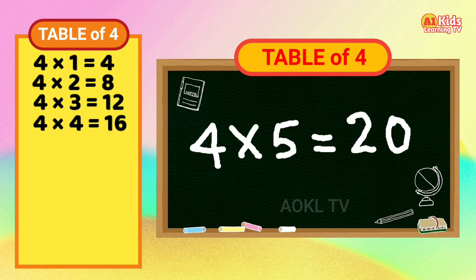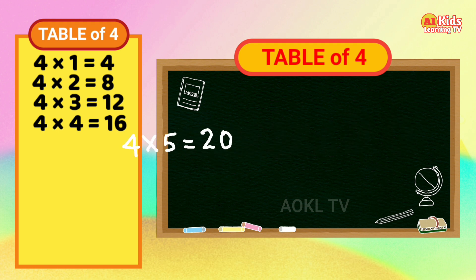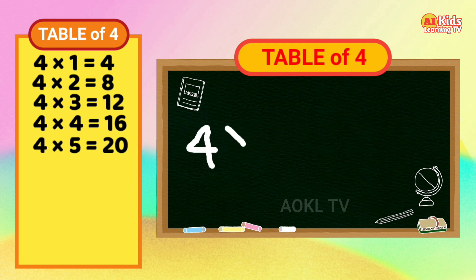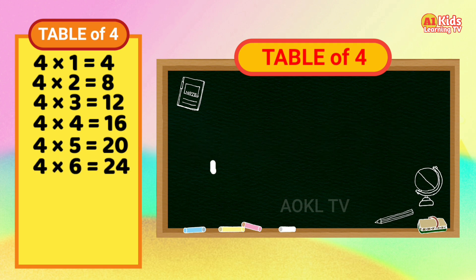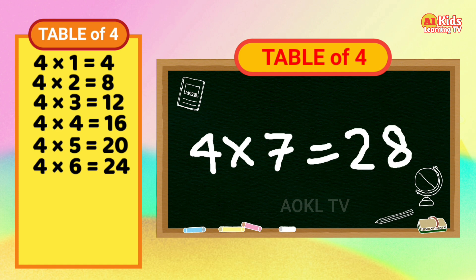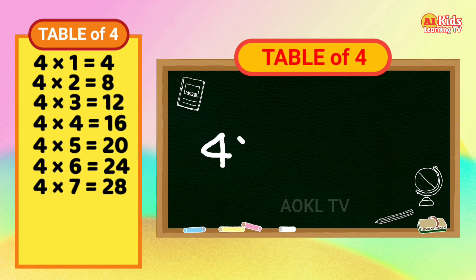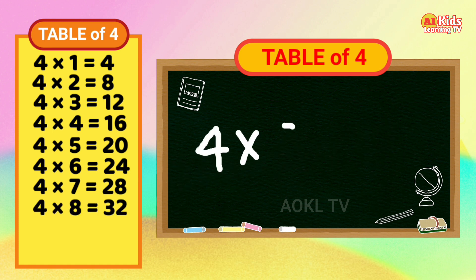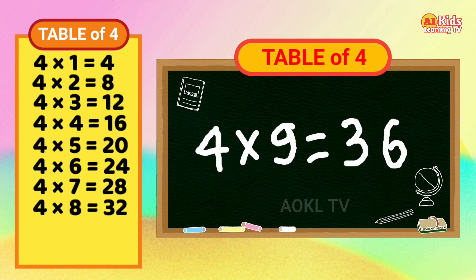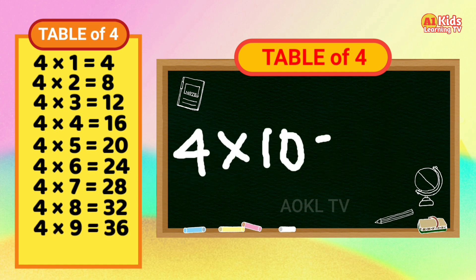Four five's are twenty. Four six's are twenty-four. Four seven's are twenty-eight. Four eight's are thirty-two. Four nine's are thirty-six. Four ten's are forty.